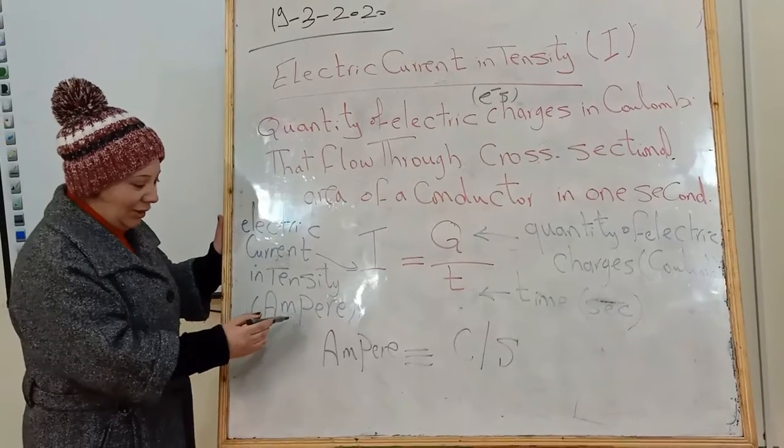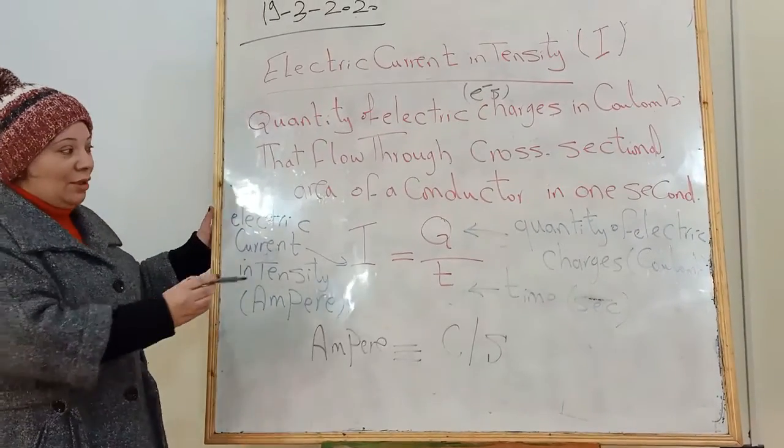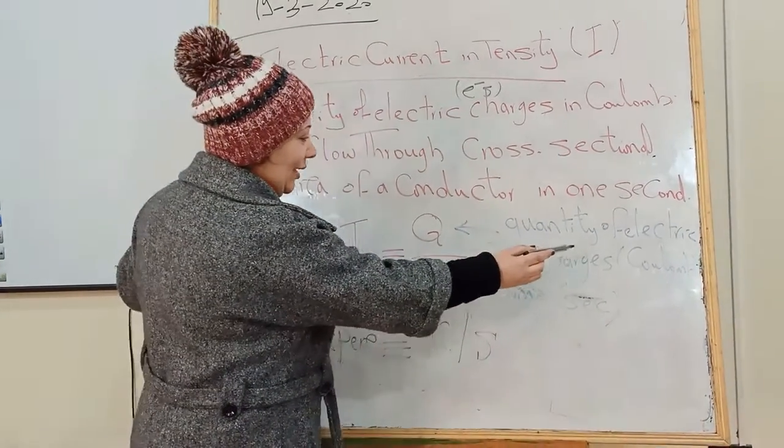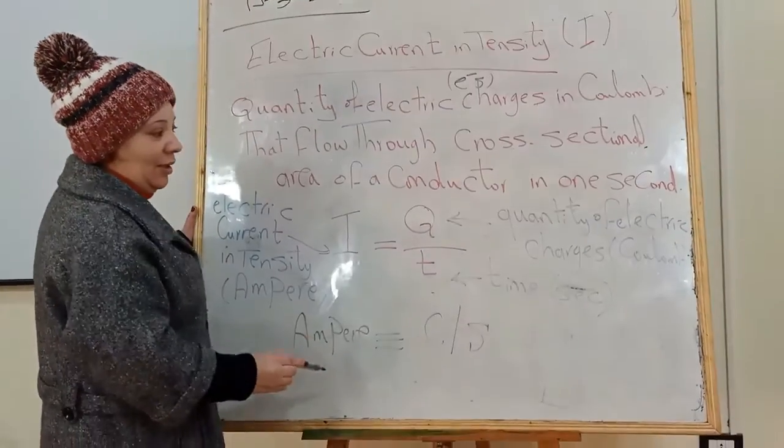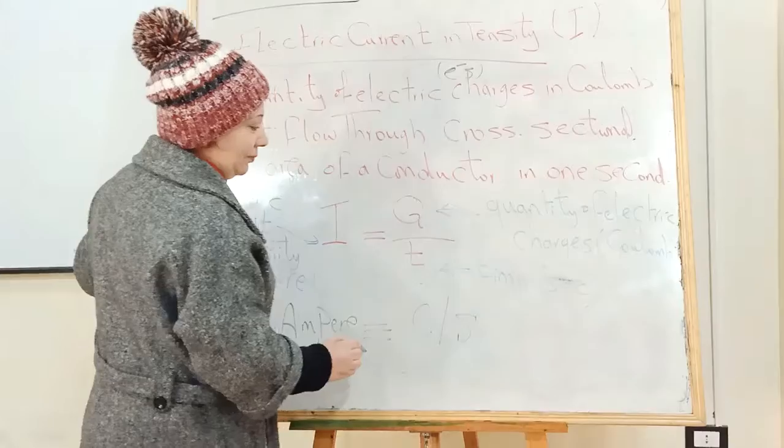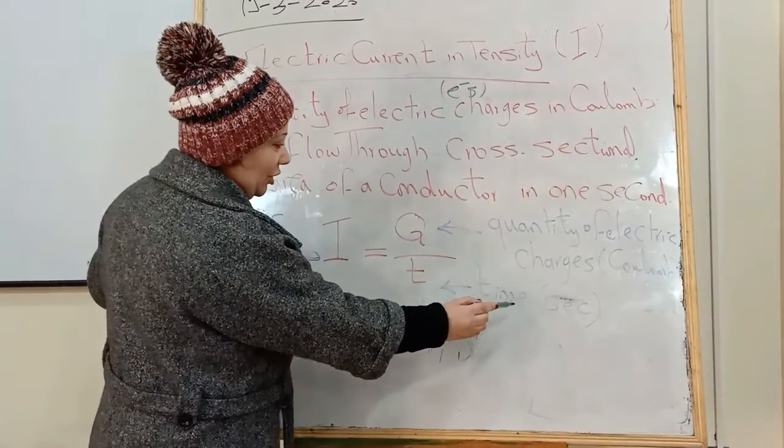Its measuring unit is ampere. Q is quantity of electric charge. Measuring unit is coulomb. T is time, measuring unit is second.